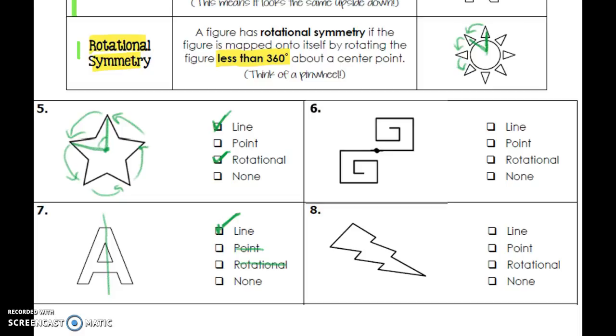Number eight. I'm looking first for a line of symmetry for anything to match up, and I don't think I can do it. I can't find any way to cut this into pieces to where it would lay on top of itself. Point symmetry, so if I were to pick a center point, if I were to spin this 180, would it look exactly the same? No. And rotational symmetry, no. I'm going to go none on this one. Hopefully that makes sense to you, because I can't see how to rotate this even just a little bit to make it match up.